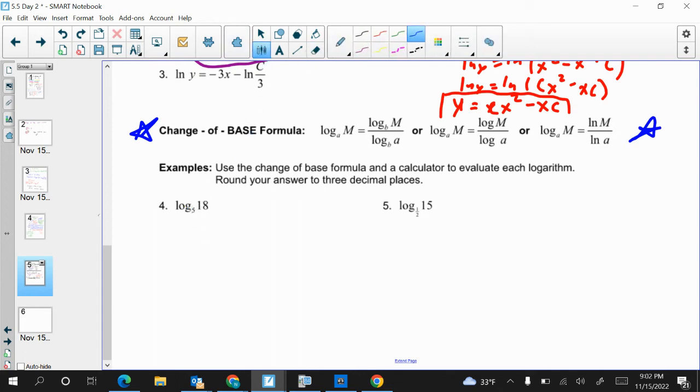But one of the rules is, or change base formula, you can come up with a generic base. You could change this base of a log from 5. It would be log, we'll just call it A for right now. A of the input over log base A of 5. Now, again, that A could be anything. To help you on your calculator, most of the time, the common log is base 10. So, you could just rewrite this as log of 18 over log of 5.